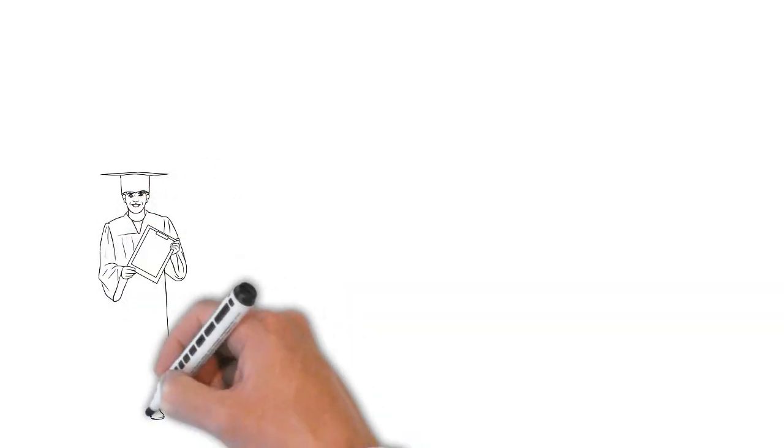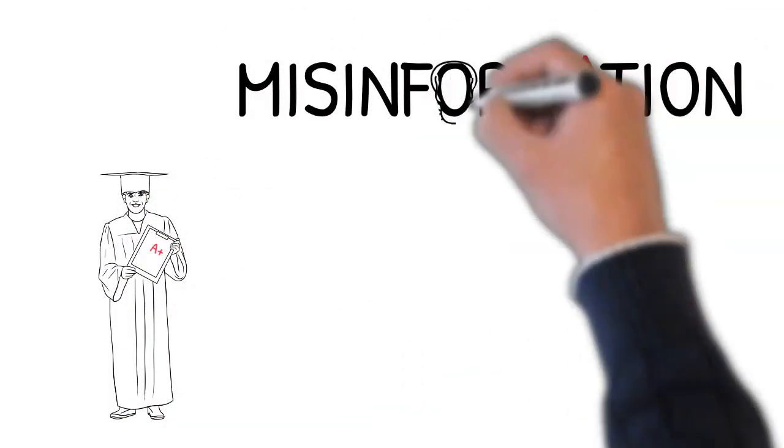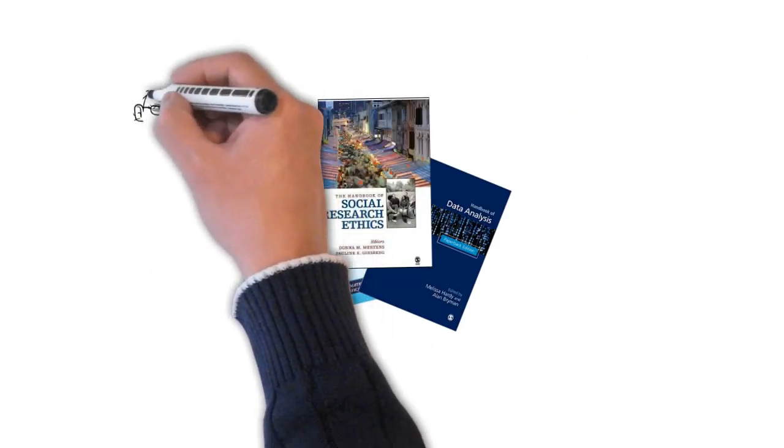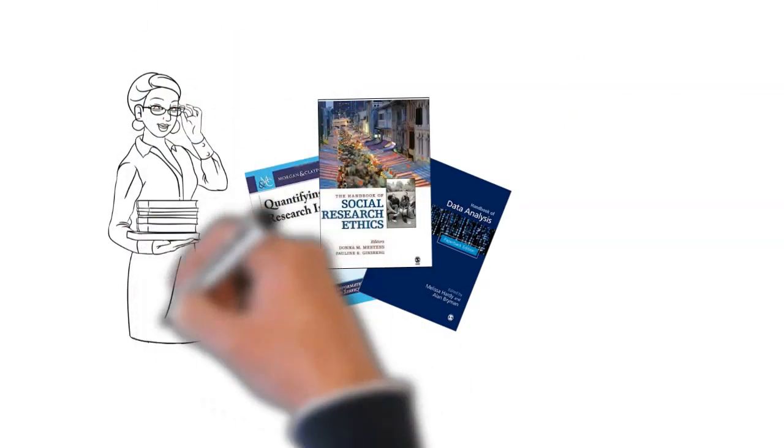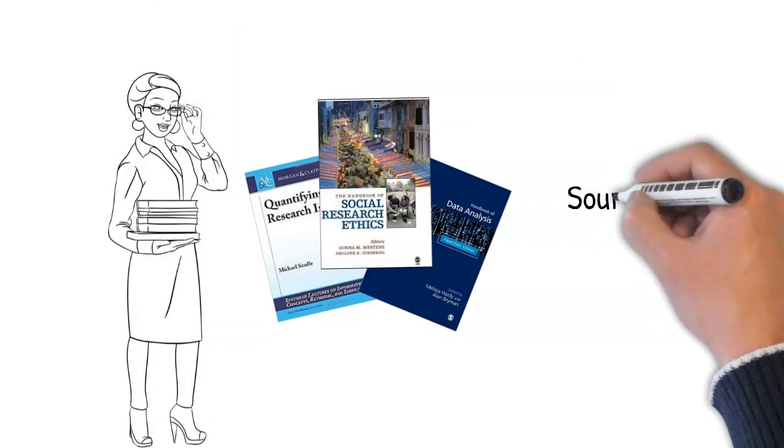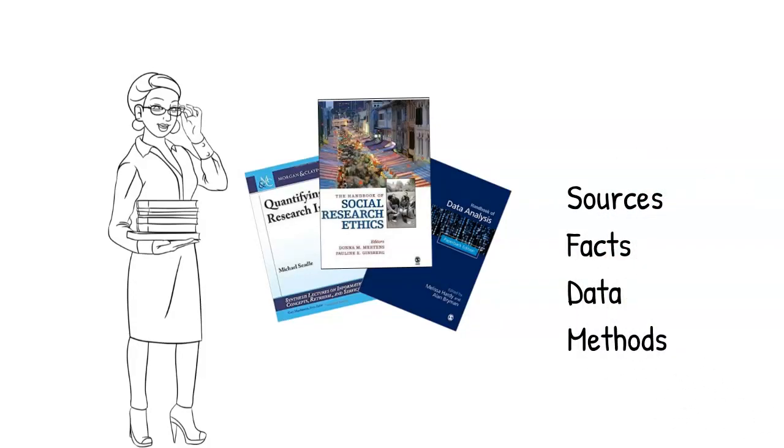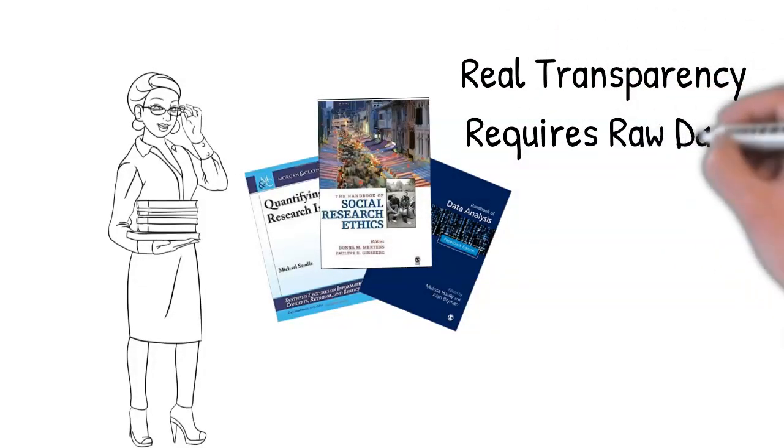This is more than grave. Misinformation can harm and even kill people. That's why books about academic integrity emphasize that researchers should be completely transparent with their sources, facts, data, and methods so that other people can readily check their results. Real transparency requires raw data.